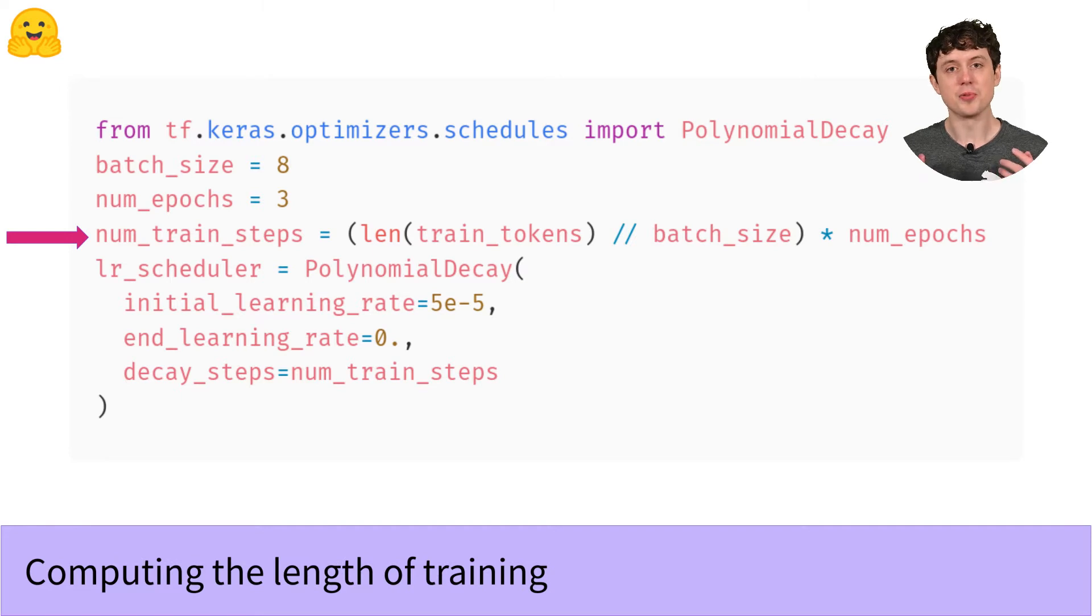So we're computing how many mini-batches the model is going to see over the entire training run. And to compute that, we're taking the size of the training set, dividing it by the batch size, which gives us the number of batches per epoch, and then we're multiplying that by the number of epochs to get the total number of batches it's going to see over the whole training run.